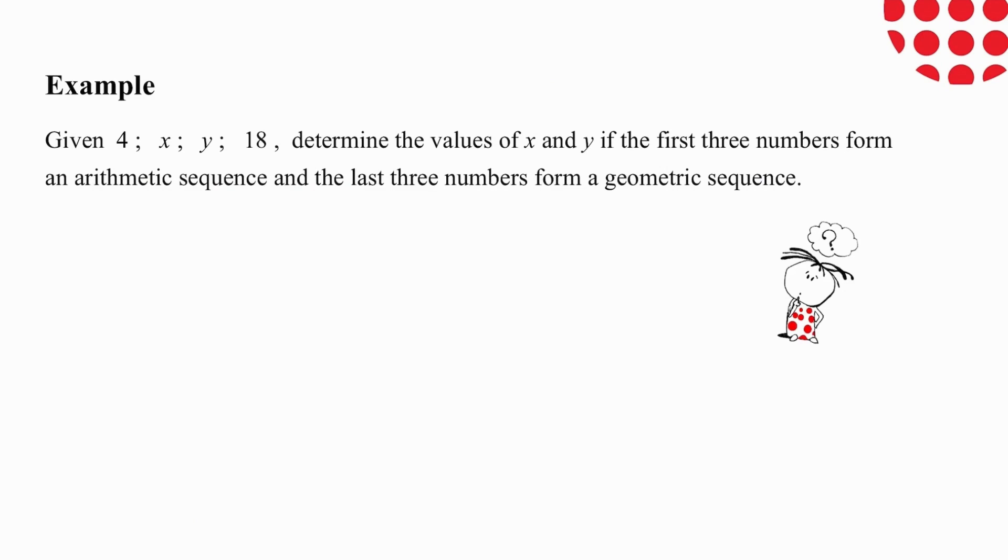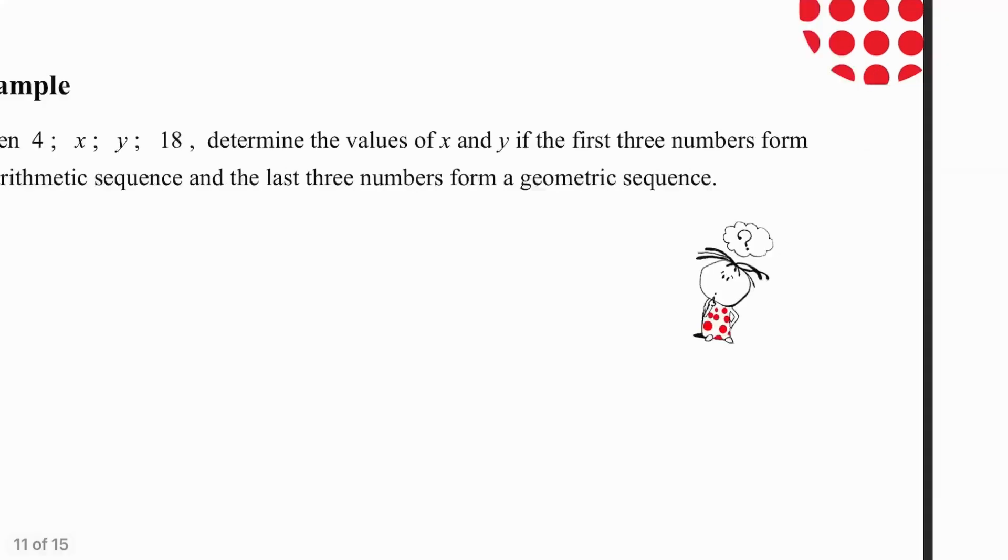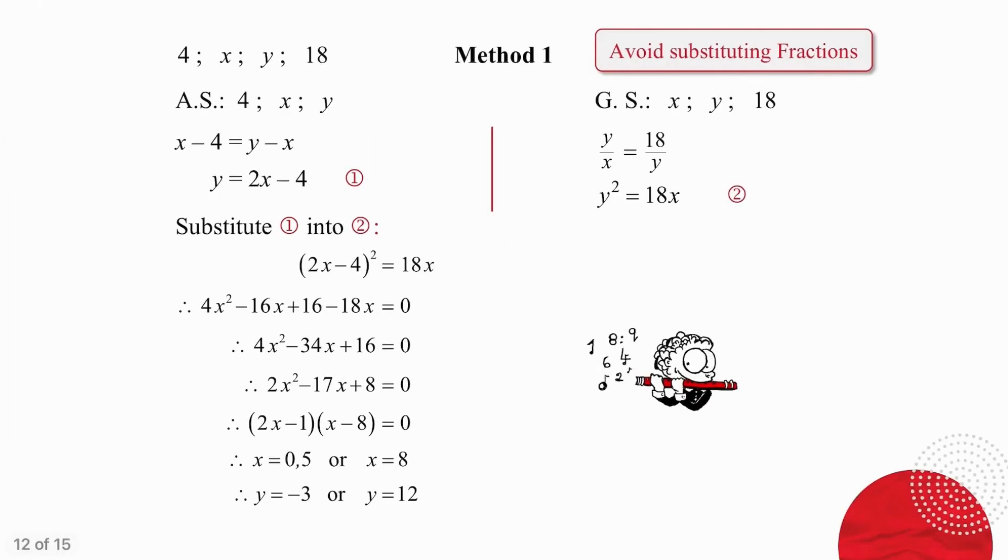We are going to conclude this video with an example that brings the two sequences together in a very nice way. It's a challenging question, but I do want you to pause the video and try it on your own before I go through it with you. The first thing you need to do, having read the question carefully, is separate out the sequence. You do not have four terms that form a pattern. You have four terms of which the first three form an arithmetic sequence, and then the last three form a geometric sequence. So you need to separate that out from the start.